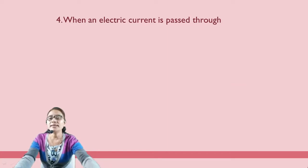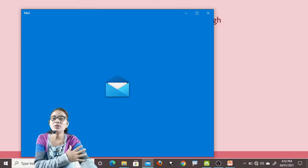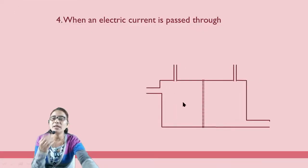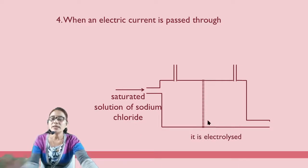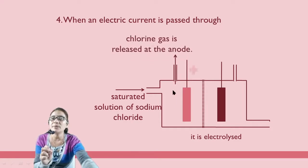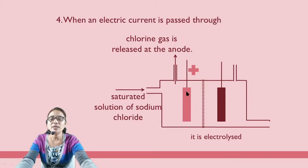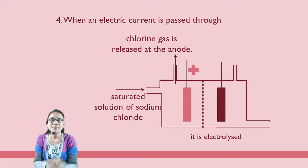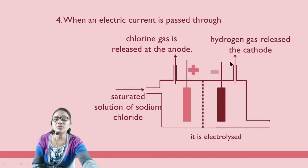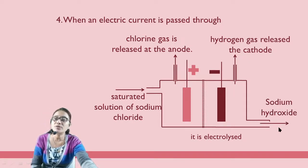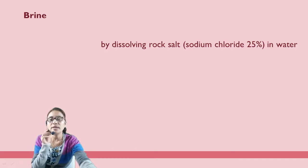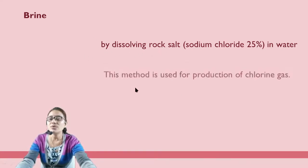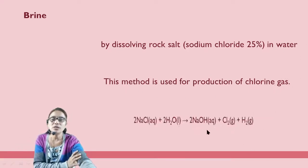When an electric current is passed through a saturated solution of sodium chloride — called brine — we perform electrolysis. Brine means a 25% salt solution, obtained by dissolving rock salt in water. At the anode, chlorine gas is released. At the cathode, hydrogen gas is released, and we also get sodium hydroxide. This method is used in the production of chlorine gas.